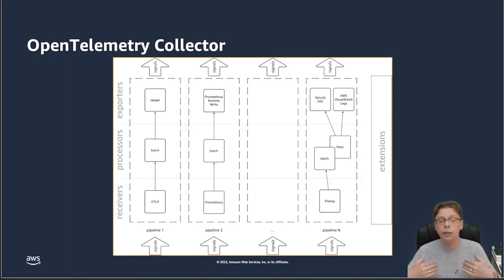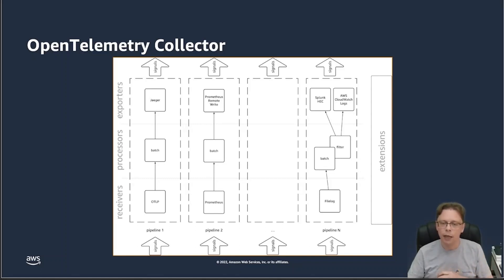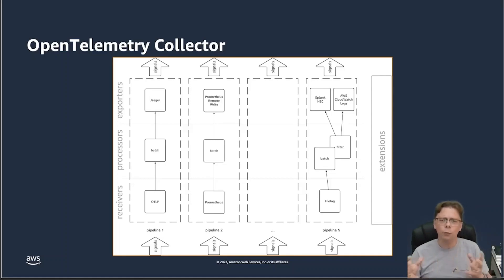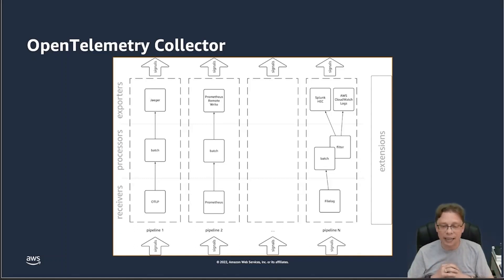You have receivers — those are inbound for ingress, where signals come from the sources into the collector. For example, you might have an OTLP native OpenTelemetry receiver. Then there are processors in the middle of the pipeline where you want to do something — for example, you might want to drop certain logs or redact them because there is PII, personal information in there, or you want to batch them, sending signals in groups rather than one at a time. And then there are the exporters, which allow you to ingest those signals into the backend destinations — for example, to Jaeger, Prometheus, and so on.